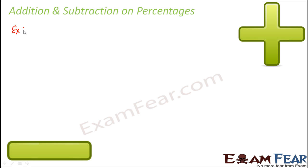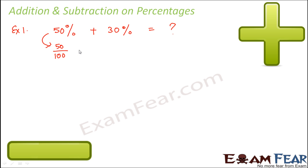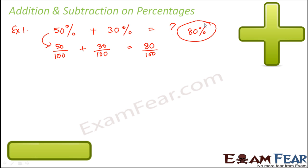Let's look at examples to understand this. What would you do if you have to add 50% to 30%? Basically, 50% is 50 out of 100, and 30% is 30 out of 100. So this would be 50 plus 30, which is 80 out of 100 — equal to 80%. When you add two percentages, you just add them like normal numbers and then put a percentage sign.